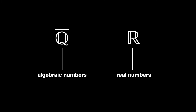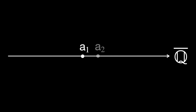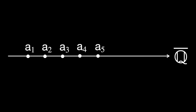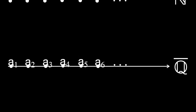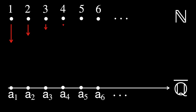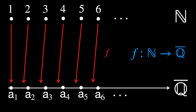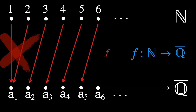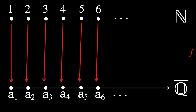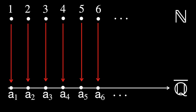To understand why algebraic numbers are rare, we compare their size to the set of all real numbers. First of all, the set of algebraic numbers is countable. It means that you can count them, at least theoretically, even though you would never be able to stop because they are not finite. Rigorously, we say that there is a mapping f that goes from the natural numbers to the algebraic numbers, such that this mapping is one-to-one and also onto, so it spans all the algebraic numbers.